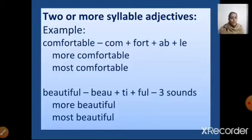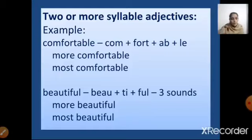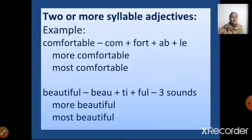Let us look at this example: comfortable. Com-for-ta-ble. The sound O comes in 'com', O again in 'for', the sound A in '-ta-', and the sound E in '-ble'. So there are more than two syllables here. So I am going to use 'more' or 'most'. When using comparative degree, I will say 'more comfortable'; when using superlative degree, I will say 'most comfortable'.